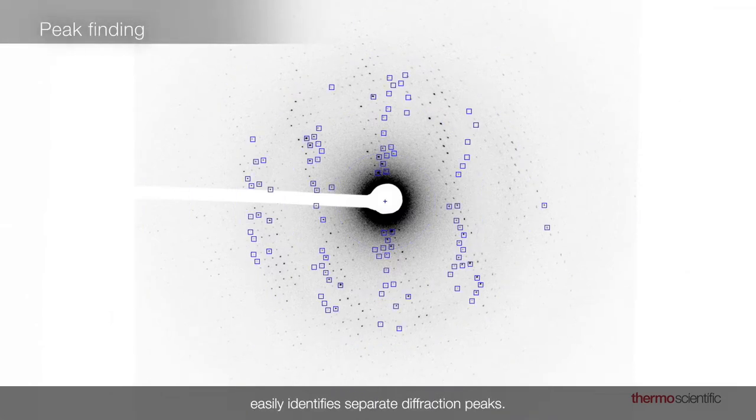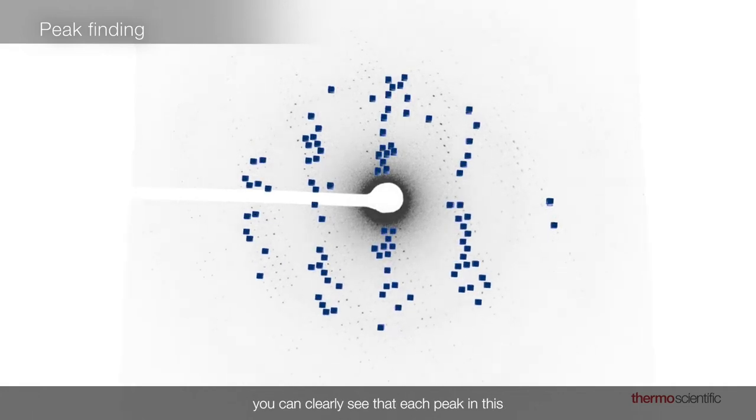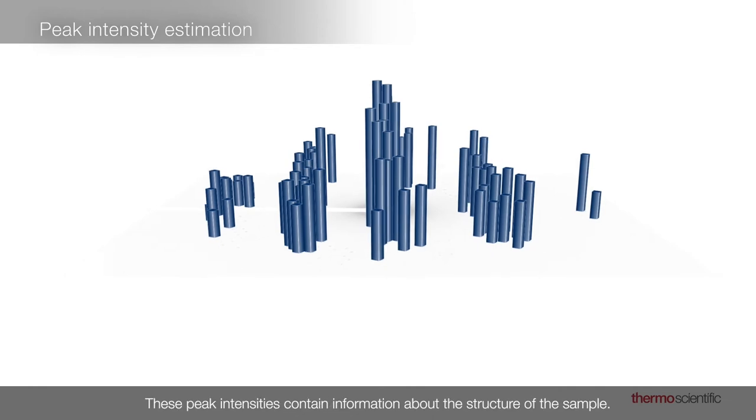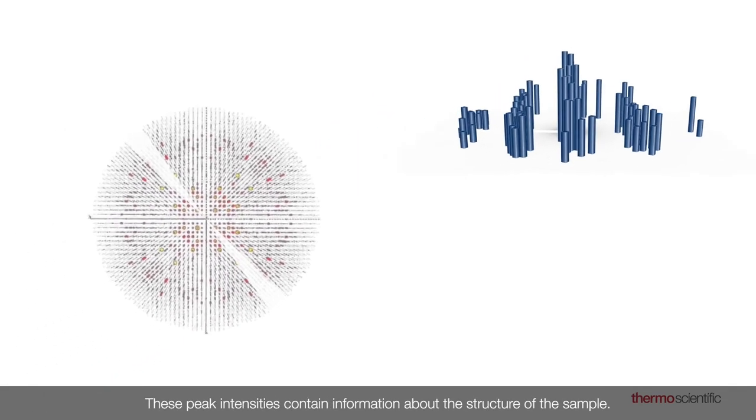Data processing software easily identifies separate diffraction peaks. You can clearly see that each peak in this 3D representation has a different intensity. These peak intensities contain information about the structure of the sample.